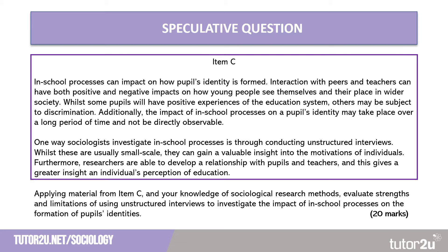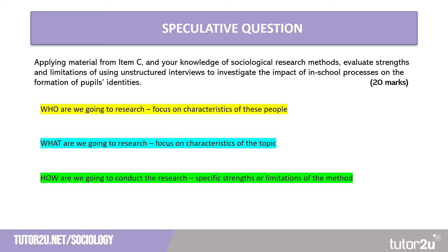Now that we've looked at the item, we should annotate some of the ideas that will help us to answer the question. There are three key ideas hinted at in the item. First, highlighted in yellow, is who we are going to research — we need to find out the characteristics of those people. Because it's on in-school processes and pupils' identities, we're more than likely going to be focusing on teachers and pupils, and we need to think about their characteristics when being researched.